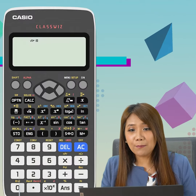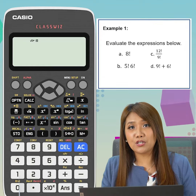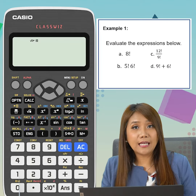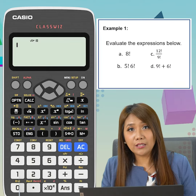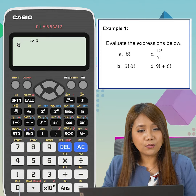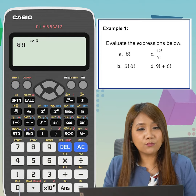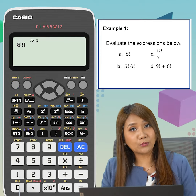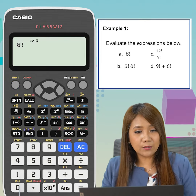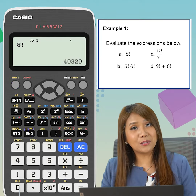On our first example, let's evaluate the expression above. To evaluate 8 factorial, we key in 8, followed by shift x raised to negative 1 so that factorial will appear. We click on equal sign and the answer is 4,320.